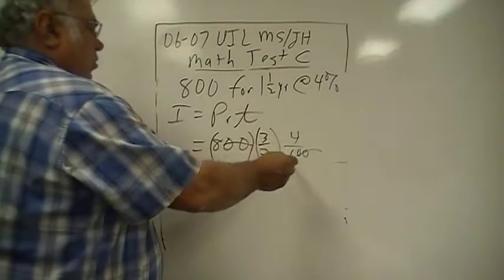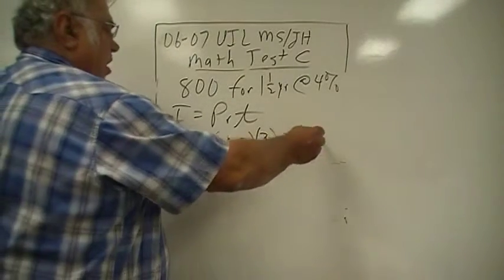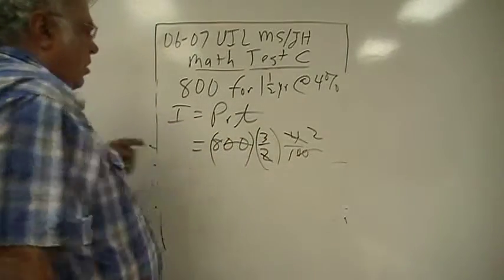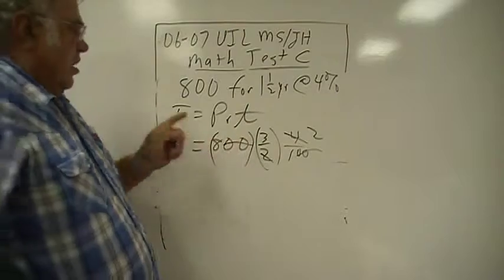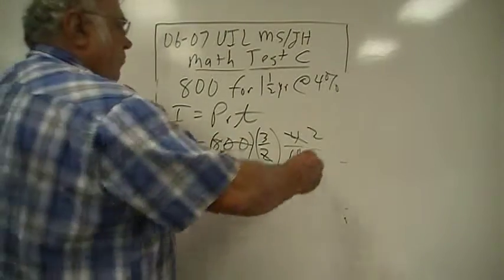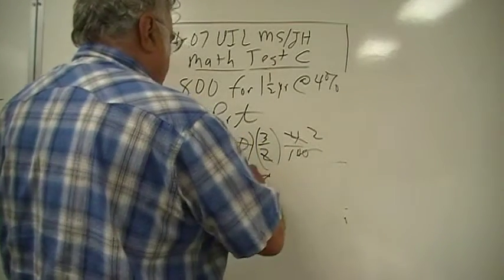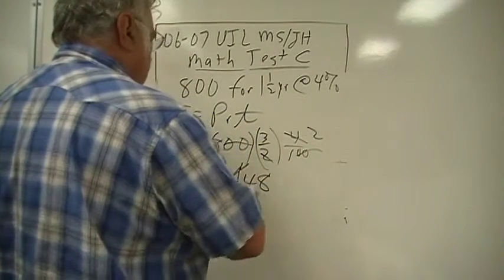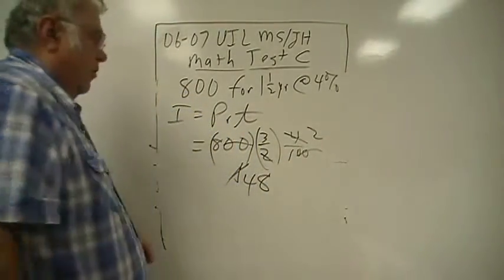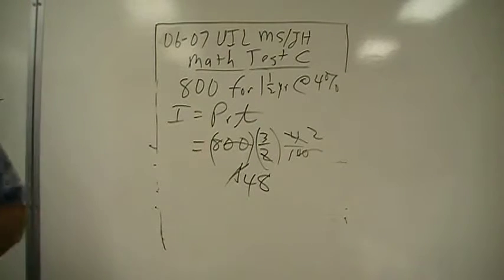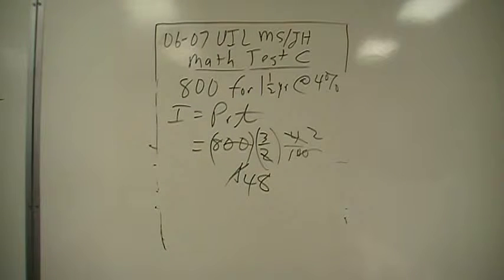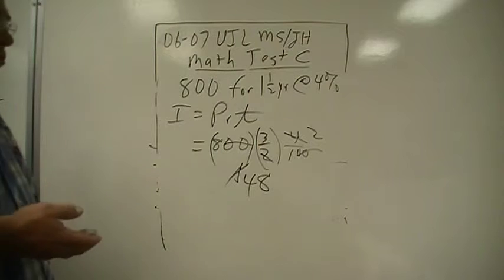Two of the one to four twice, so six times eight gives you forty-eight dollars. So it should have made forty-eight dollars in one and a half years at four percent.